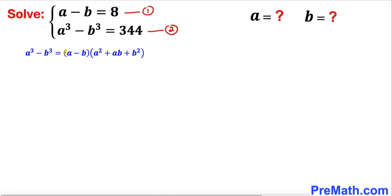Now let's recall this famous identity: a cubed minus b cubed can be written as a minus b, times a squared plus ab plus b squared. And now let's focus on this part: a squared plus ab plus b squared.